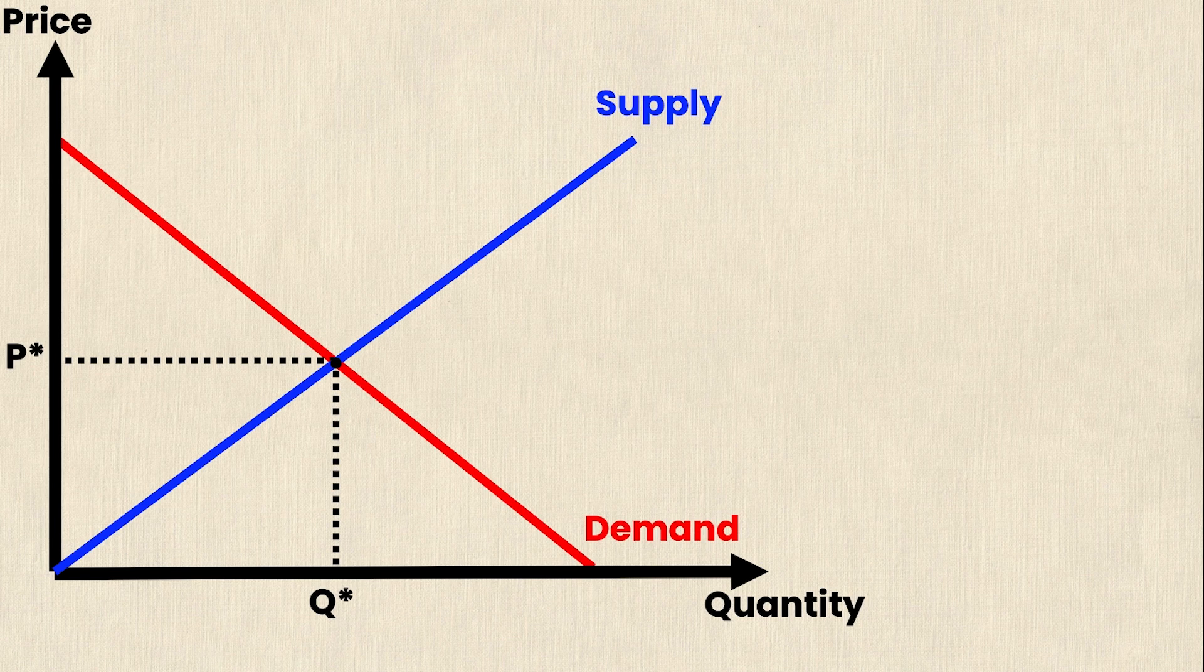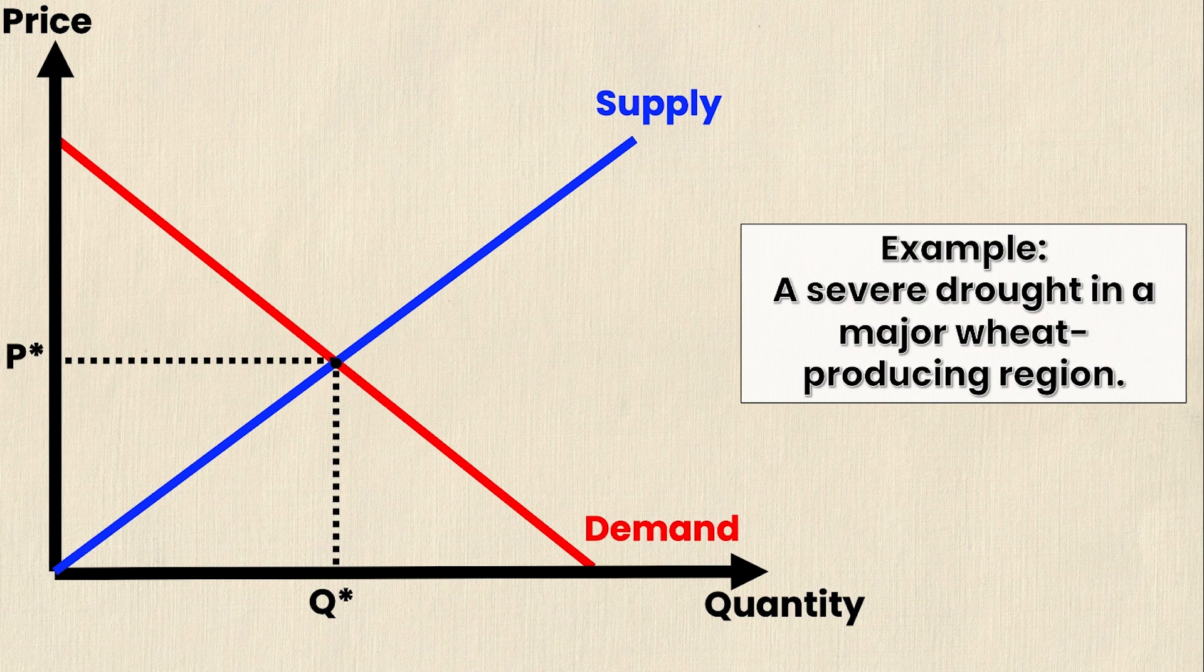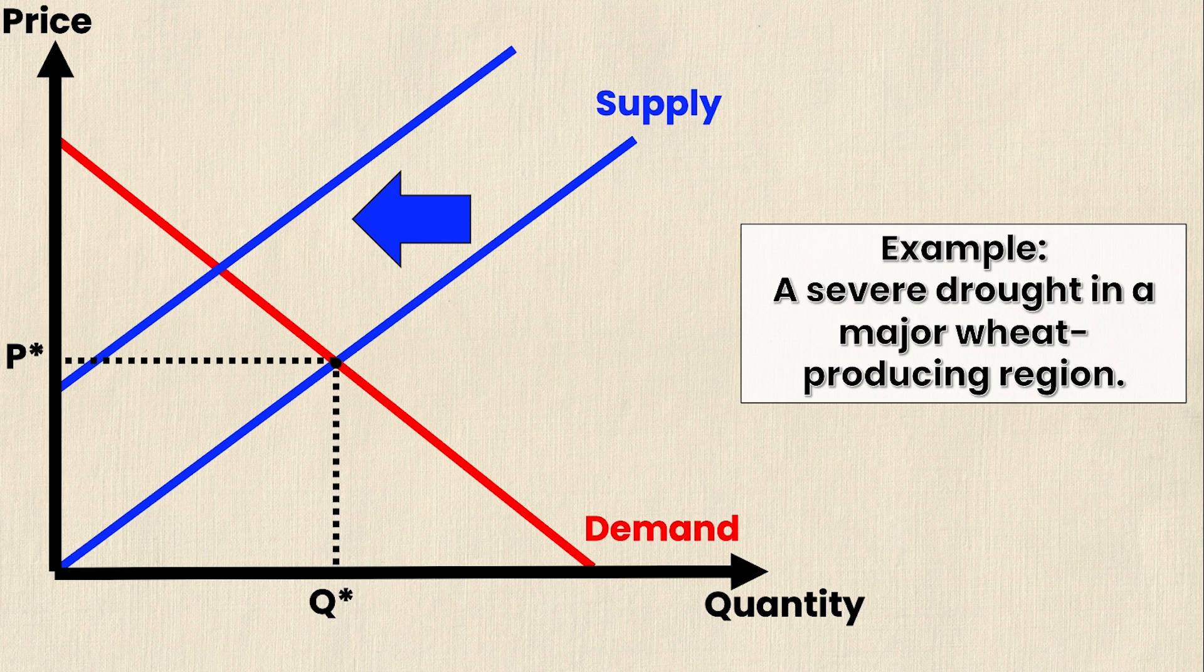Now let's introduce our supply shock. Here our example is a severe drought in a major wheat producing region. Well we know that a drought is bad for wheat production so this is going to see a decrease in supply or a shift to the left of the supply curve and that new supply curve will be denoted supply prime.